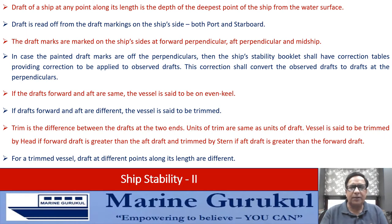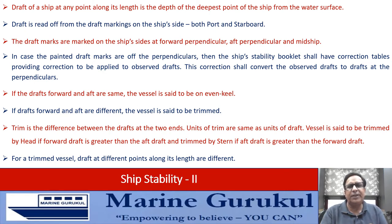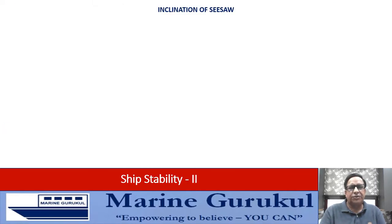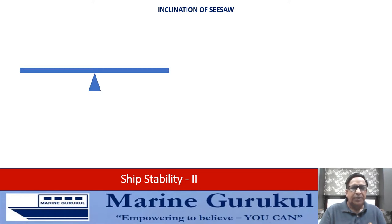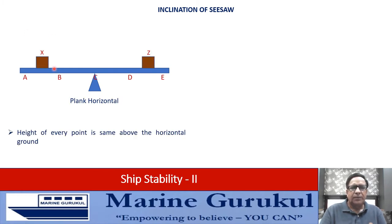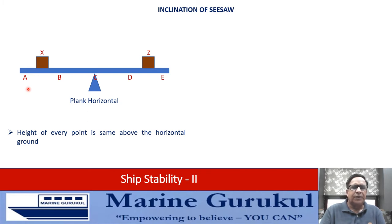For a trimmed vessel, the draft at different points along its length shall be different. The inclination of a ship is very similar to the inclination of a seesaw. Here we have a seesaw where the plank is horizontal with two equal weights at X and Z, placed at equispaced distances from the point of support. The height of the plank above the ground is the same at all points A, B, C, D, and E.